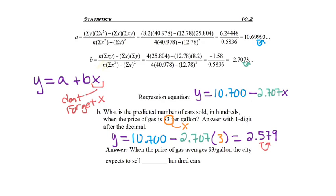Rounding to one place after the decimal per the directions. And I expect to sell 2.6 hundred cars when the average price of gas is $3 a gallon.